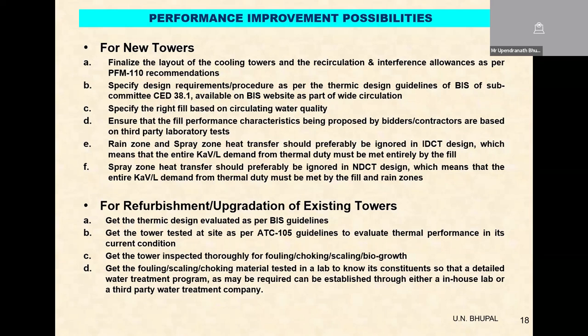There are certain small things which need to be specified in the contract, like the heat transfer performance in the rain zone. The rain zone is basically the water droplets that exit the fill media and fall from the fill into the basin — that rain zone comes in contact with ambient air when it enters the air inlet. There is a tendency in the industry to consider the heat transfer in this rain zone for IDCTs as well, but the height of the air inlet in IDCTs is very small. The impact of rain zone on the KV value — the heat transfer in the cooling tower — is quite small, so it has to be neglected and there has to be some conservativeness in design, since the cooling tower will have to perform for at least 40 years based on the life of the plant.